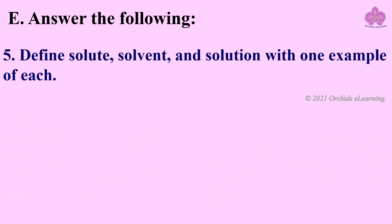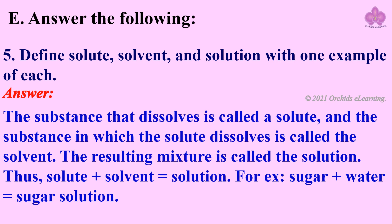Define solute, solvent, and solution with one example of each. Answer: The substance that dissolves is called a solute, and the substance in which the solute dissolves is called the solvent. The resulting mixture is called the solution. Thus: solute + solvent = solution. For example: sugar + water = sugar solution.